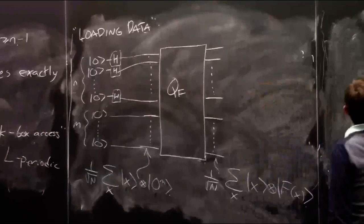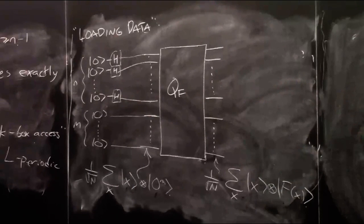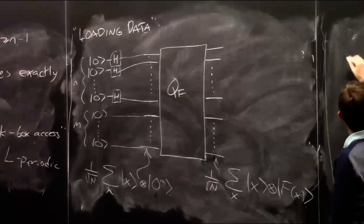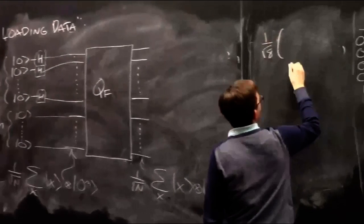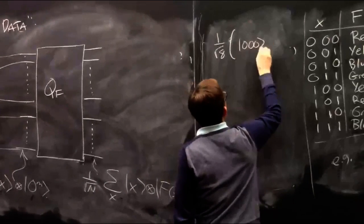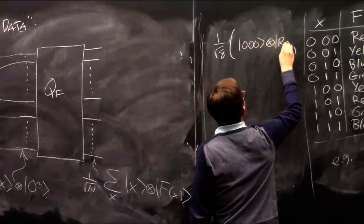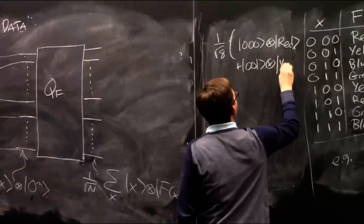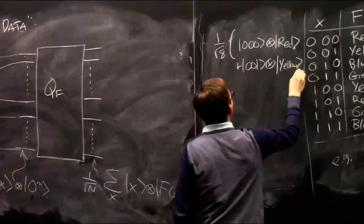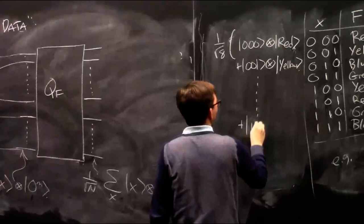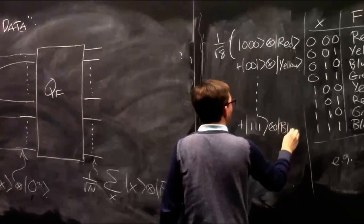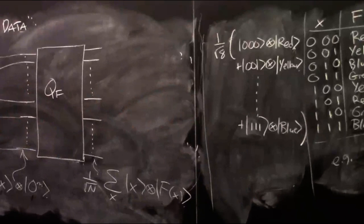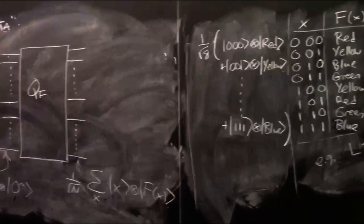In the n=3 example, the state at this point would be one over root eight times |000⟩ tensor |red⟩ plus |001⟩ tensor |yellow⟩ and so on for all eight inputs.